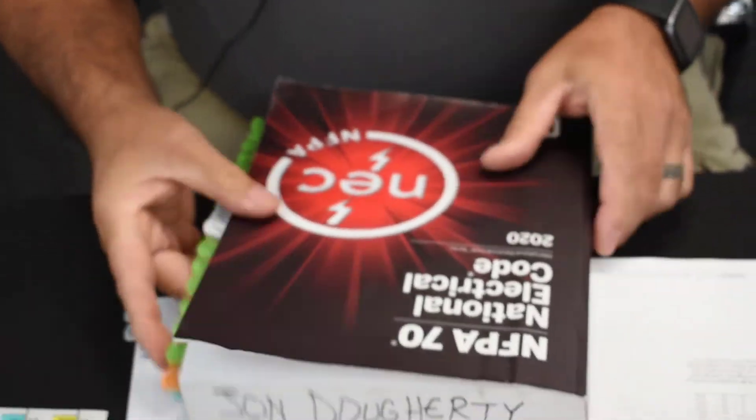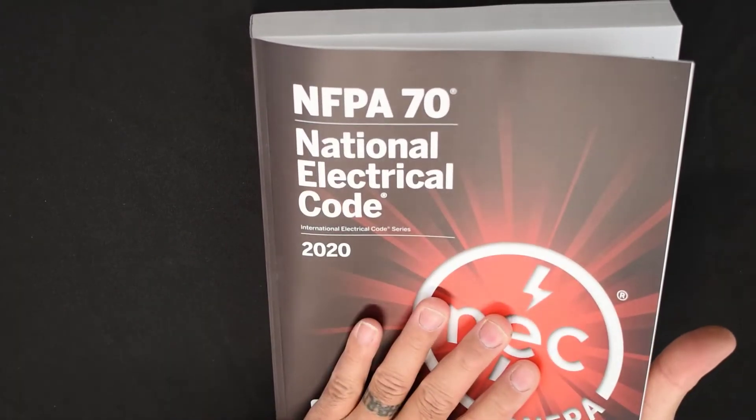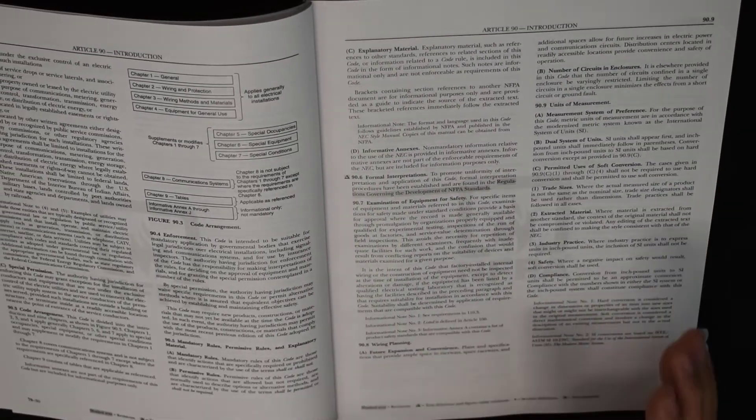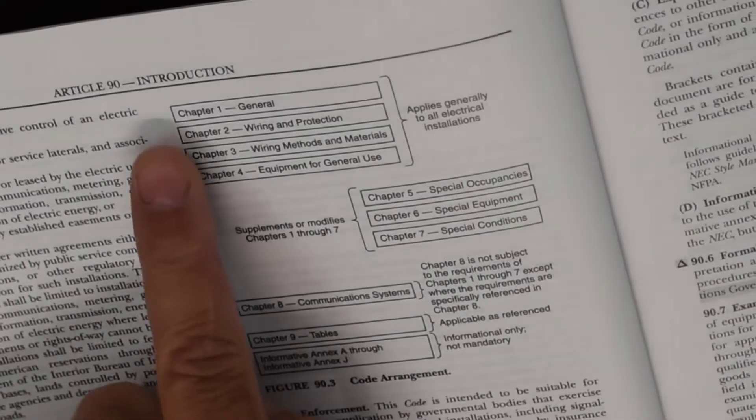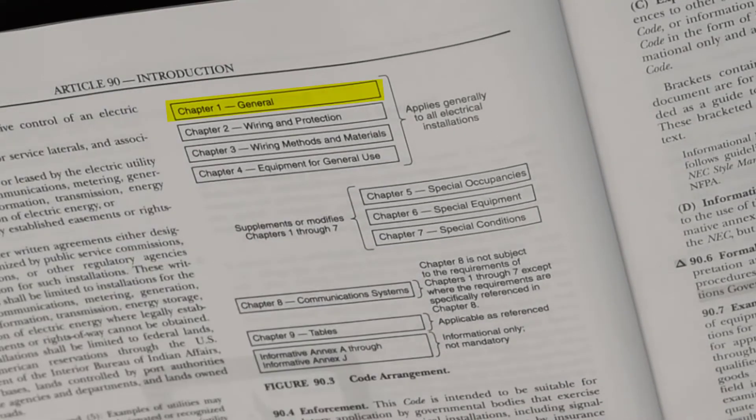We're going to understand how this book is laid out so that you can easily reference it. In the very beginning of the code book you got Article 90, and there's a nice little graphic here that talks about the code arrangement. The picture shows us that Chapter 1 is General, Chapter 2 is Wiring and Protection, Chapter 3 is Wiring Methods and Materials, Chapter 4 is Equipment for General Use.